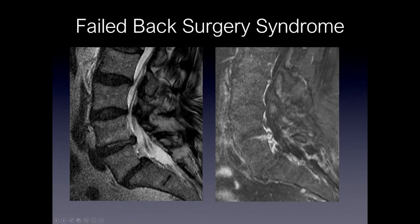It's important to be aware that disc can enhance, particularly if you do delayed imaging. In this patient, the post-contrast images were delayed by about 20 minutes. What looks like a disc herniation with continuity from the native disc on T2 — clearly a disc protrusion — shows enhancement on the post-contrast images due to delayed imaging. So timing is important: if you image immediately, disc should not enhance, but if you wait, the disc can enhance.